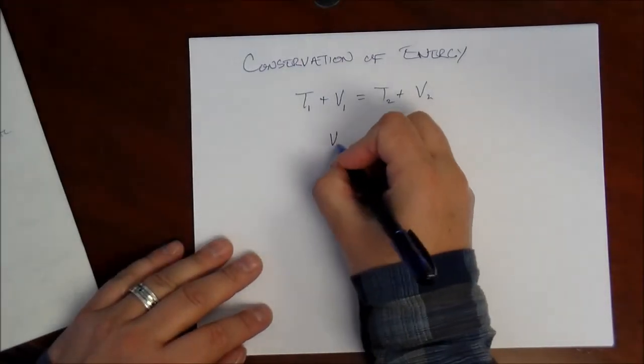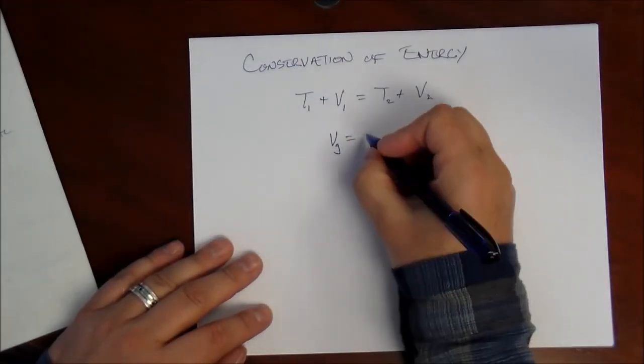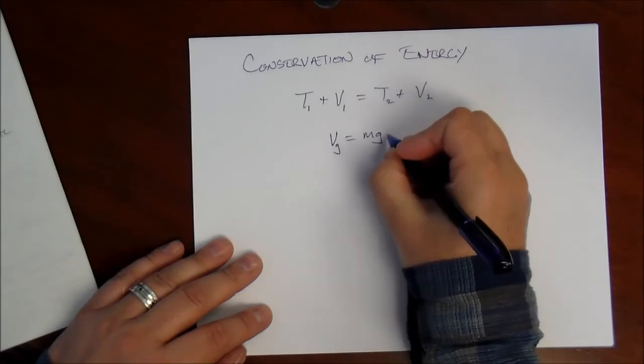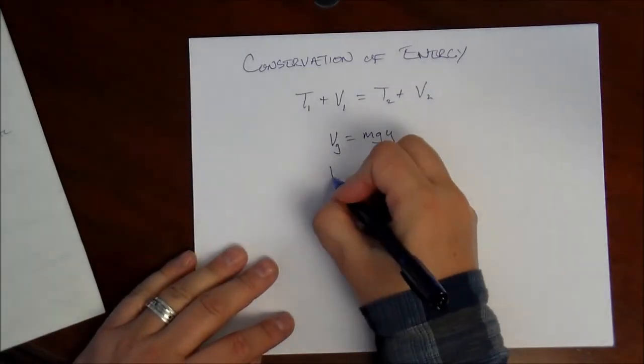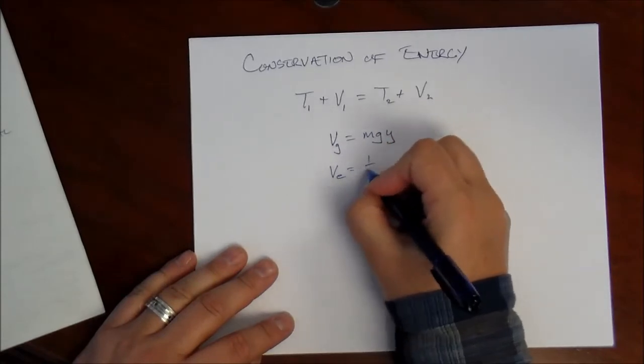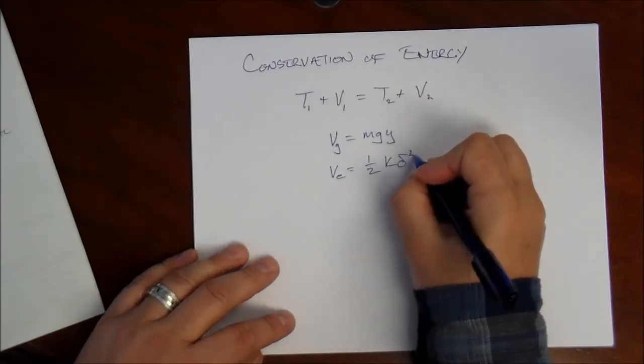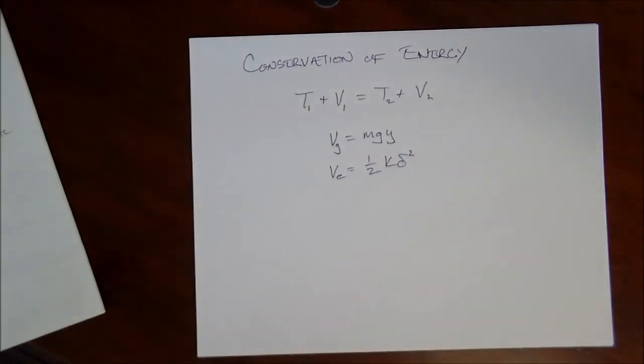So, again, we've got the potential functions, one for gravity, which is mg times y. And the potential for a spring is one half k delta squared. Those are about the only things we're going to see for rigid body motion in writing things in terms of conservation of energy, gravity and springs.